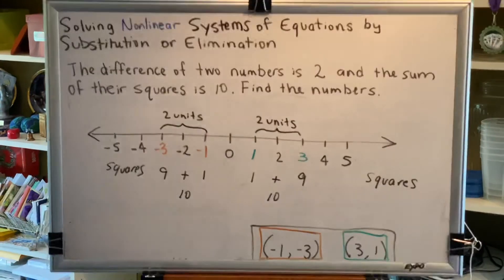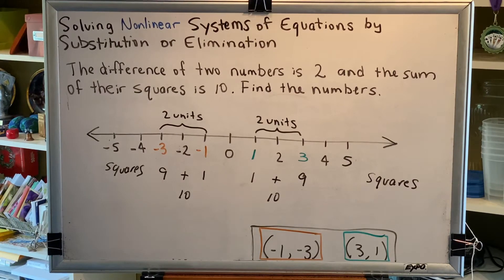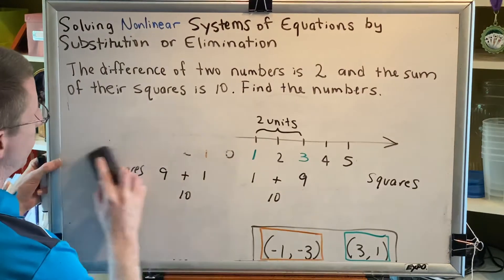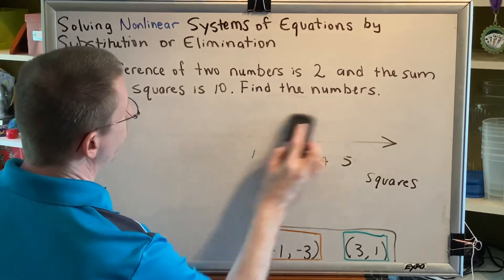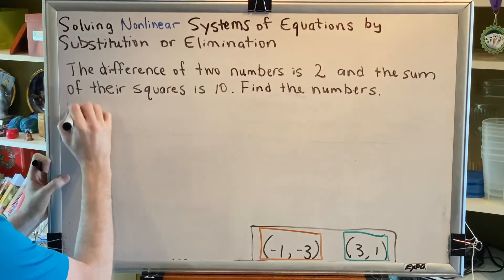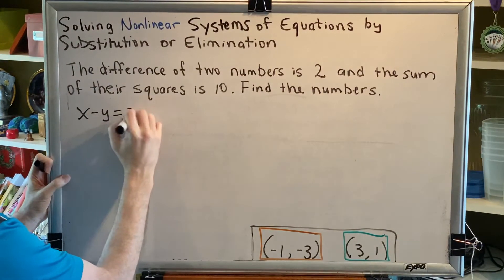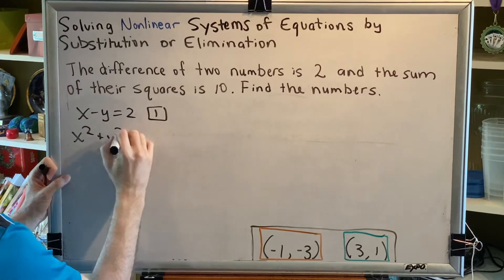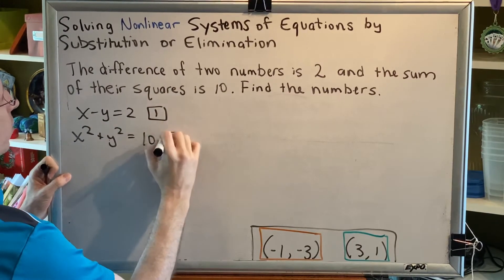By doing this, we have proven that we have solved the original problem. We can also check our answer by using symbolic algebra. Let's rewrite our two equations one more time. They were x minus y equals 2, which was equation 1, and x squared plus y squared equals 10, which was equation 2.